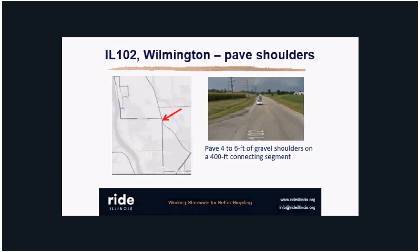Using the Strava heat map — just google 'Strava bike heat map' — we saw that in Wilmington, cyclists travel on a parallel road for most of the route but hop onto the state road for just 400 feet. In that case, we simply asked for some gravel shoulders to be paved for that short stretch — that's it.